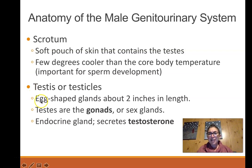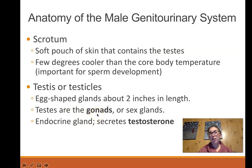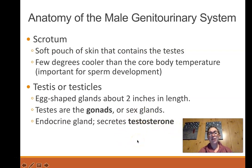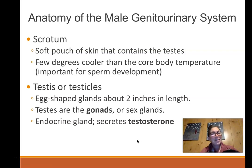The testes are the organs that produce the reproductive cells — the sperm. We call these organs gonads; gono means seed. The female gonads are the ovaries; the male gonads are the testes. The testes are also part of the endocrine system because they produce hormones. The main hormone they produce is testosterone — literally a steroid hormone made by the testes. It is also made in females, just in much smaller quantities.